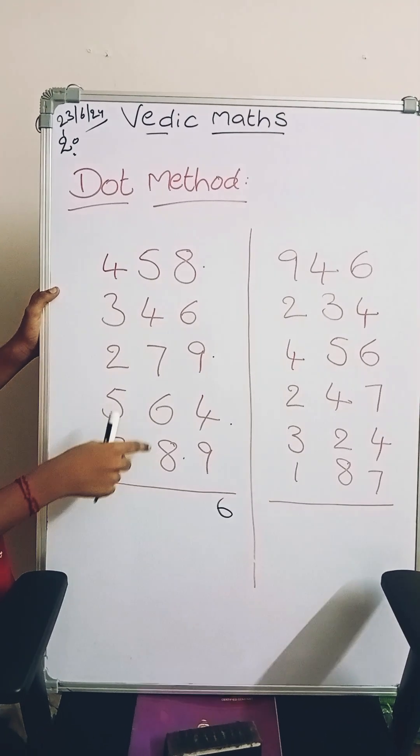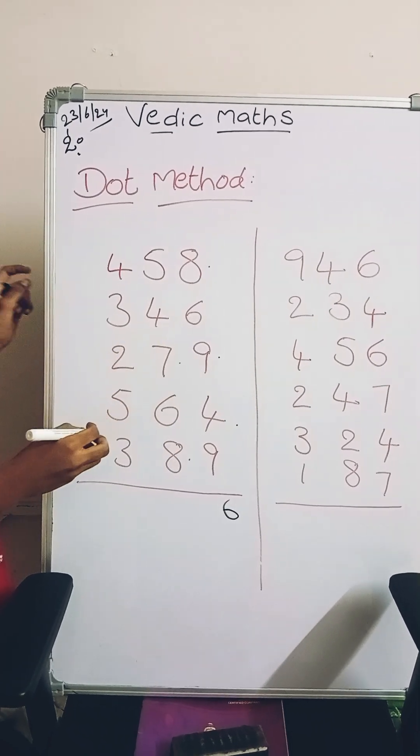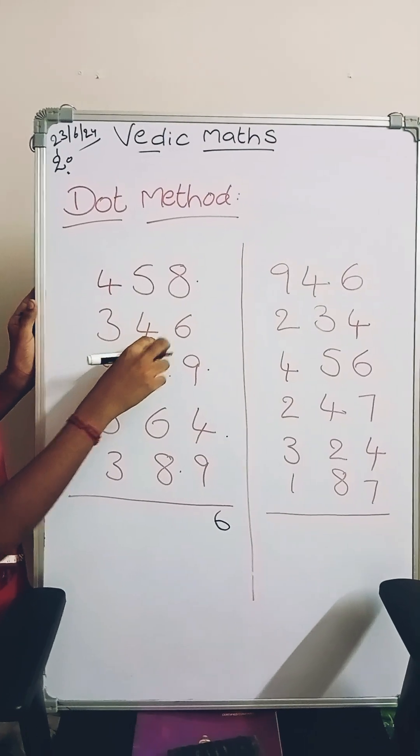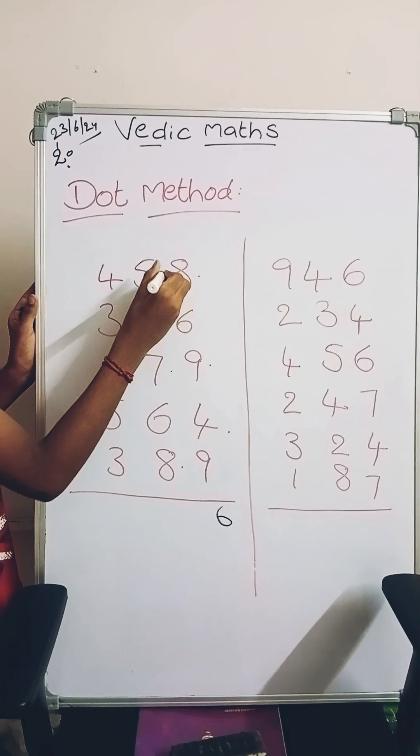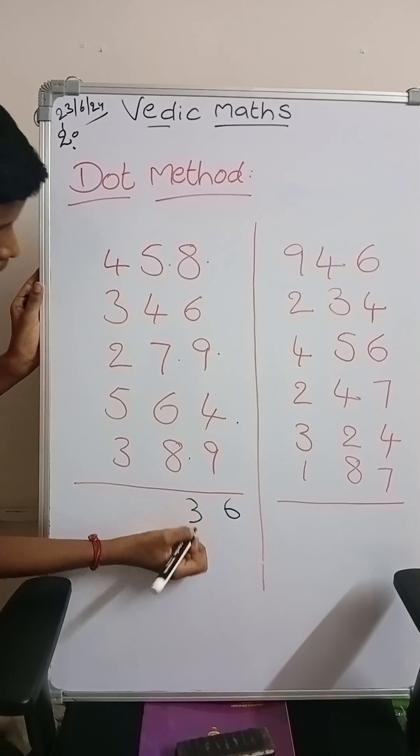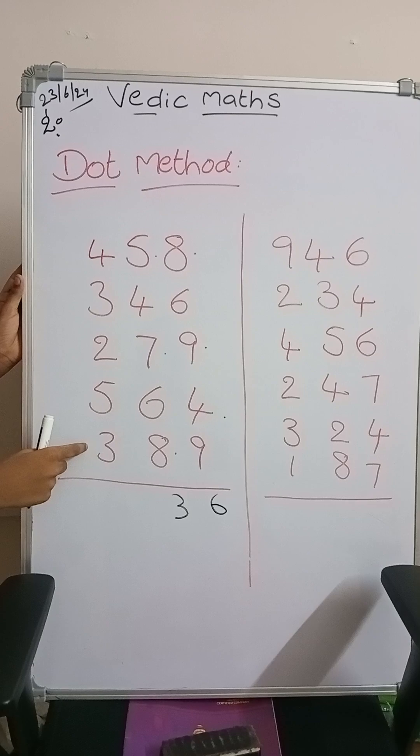And 1 plus 6 is 7. 7 plus 7 is 14. Put a dot and keep 4 in your mind. 4 plus 4 is 8. 8 plus 5 is 13. Put a dot.